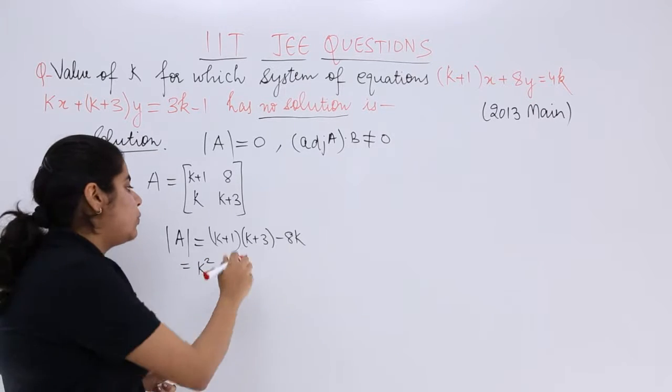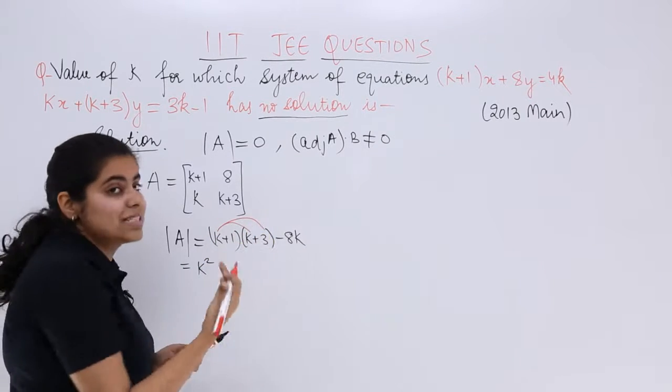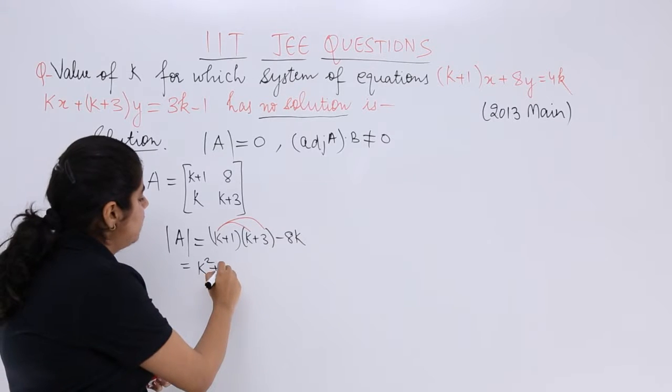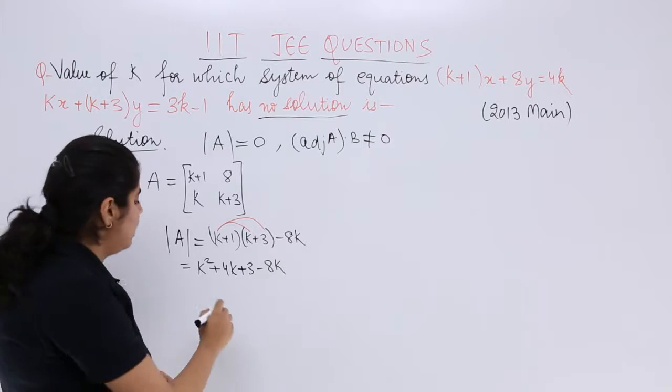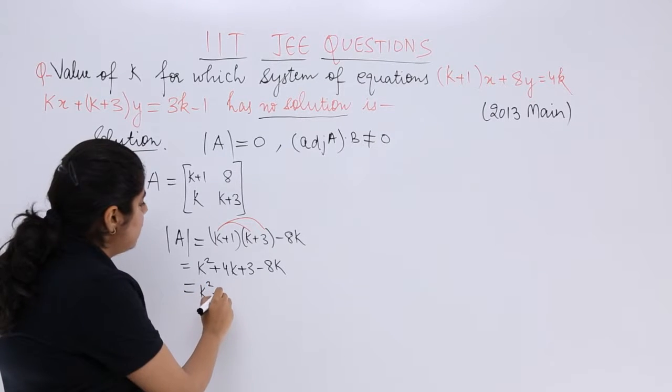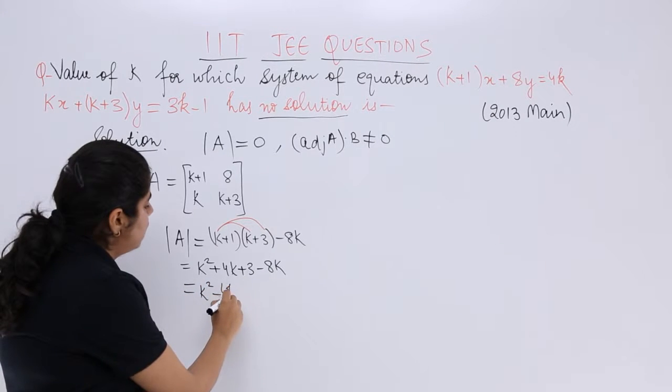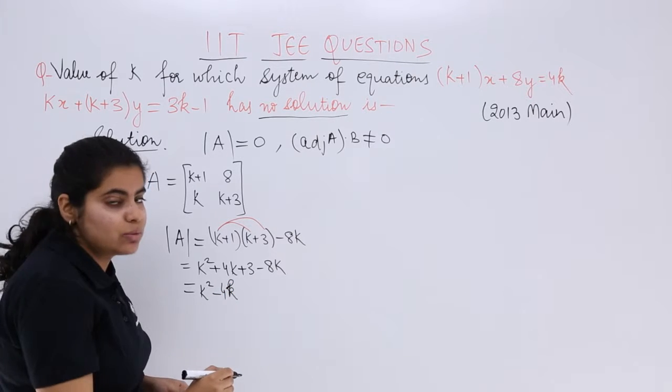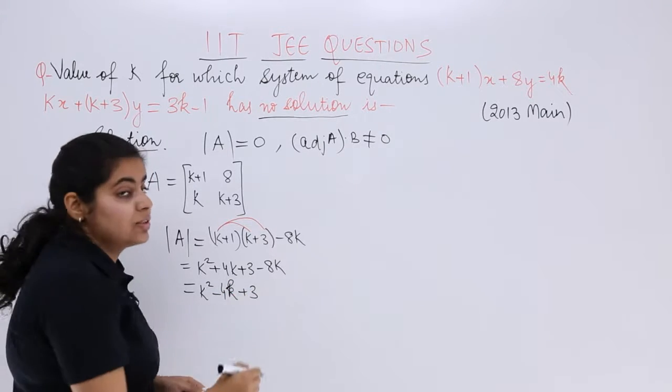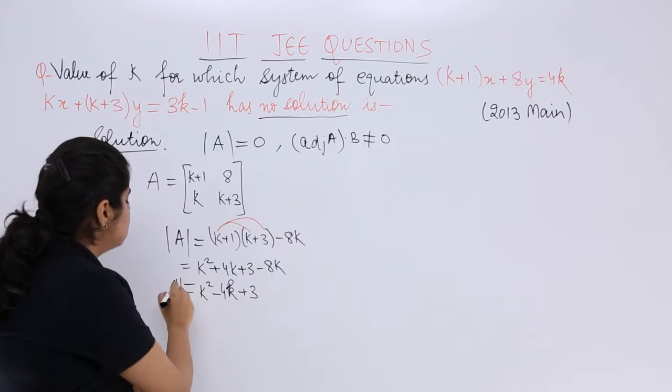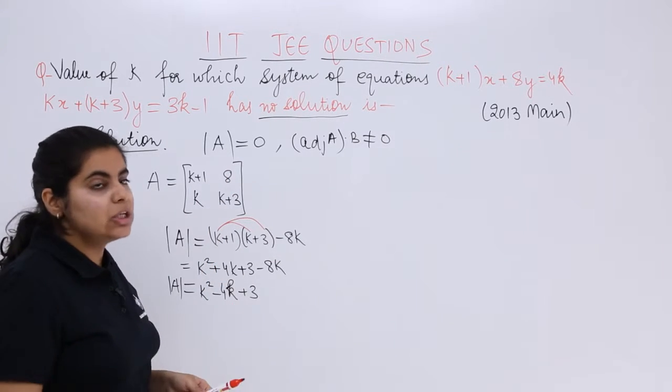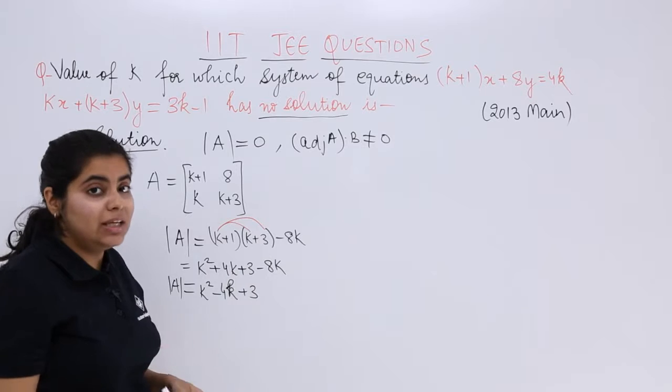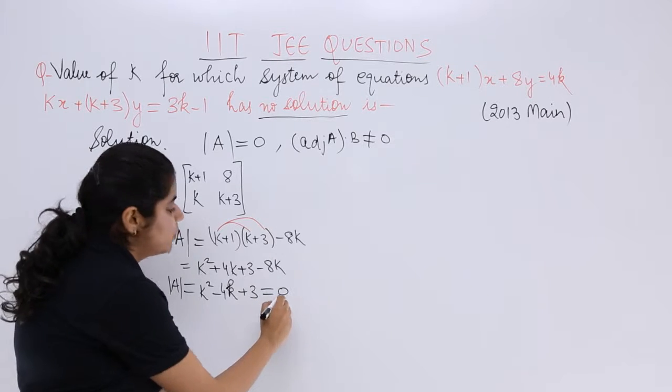We multiply and simplify. So it is k² + 4k + 3 - 8k. Then it is k² - 4k + 3. This is det A, and we know that for no solution, the determinant of A should equal 0. So let us put it equal to 0.